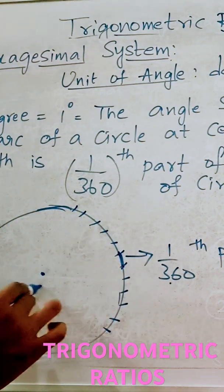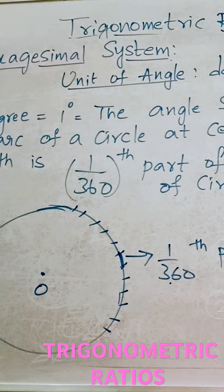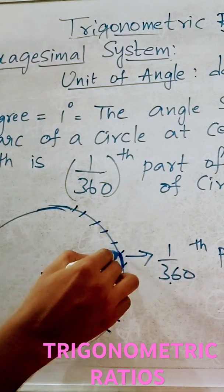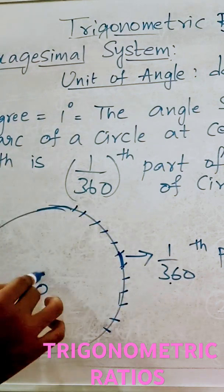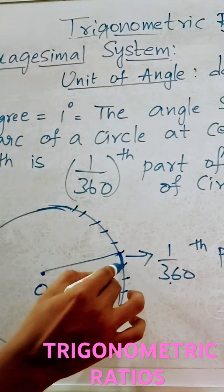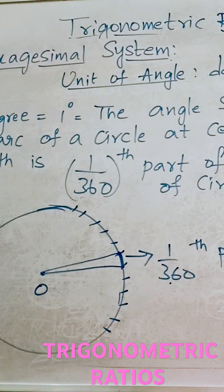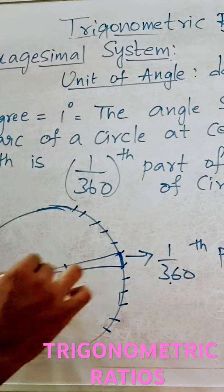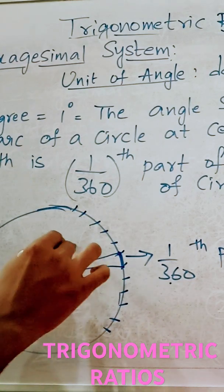Now, consider the center of the circle and the angle subtended by this arc at the center of the circle. The angle subtended by this arc at the center of the circle. Such an angle, this angle is called 1 degree.